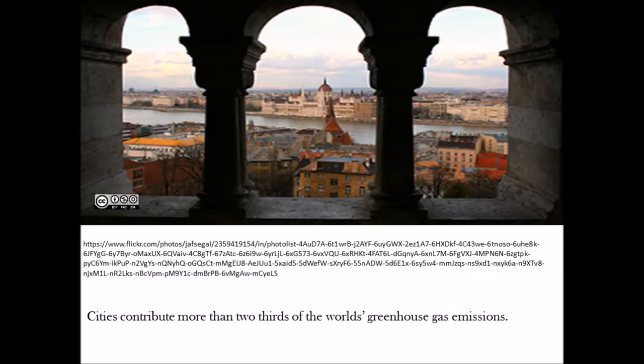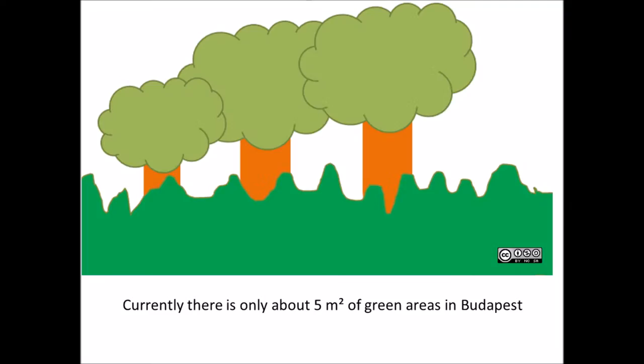Cities contribute more than two-thirds of the world's greenhouse gas emissions. Currently there is only 5m² of green area in Budapest which in turn causes the urban heat island effect. How does this affect the climate of Budapest or Hungary?